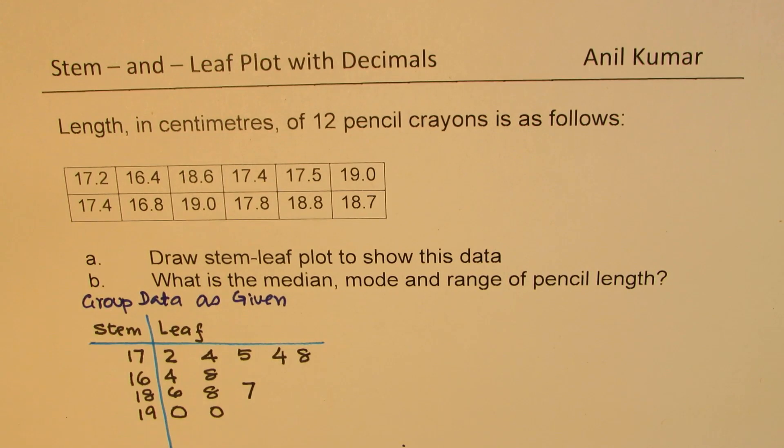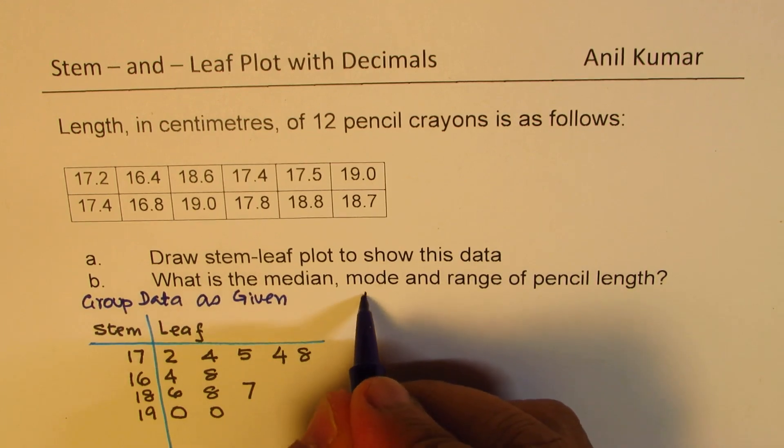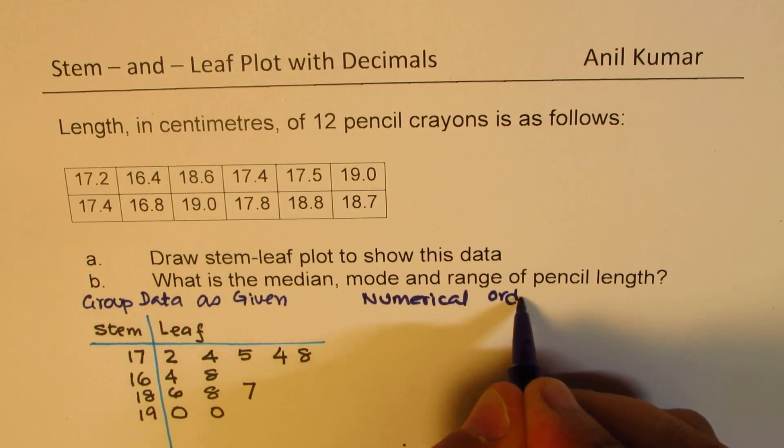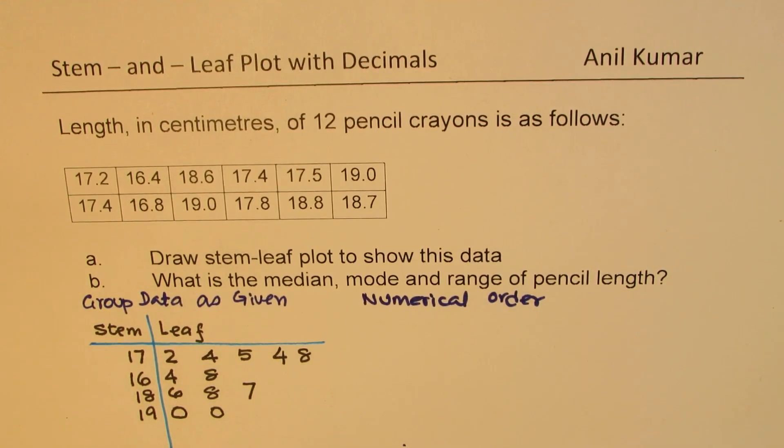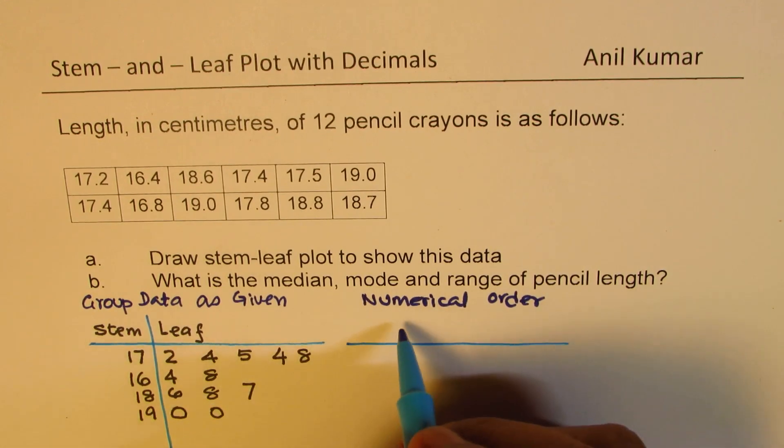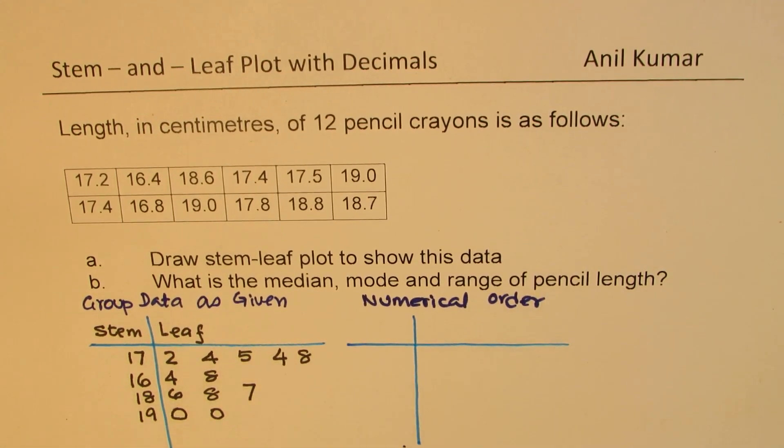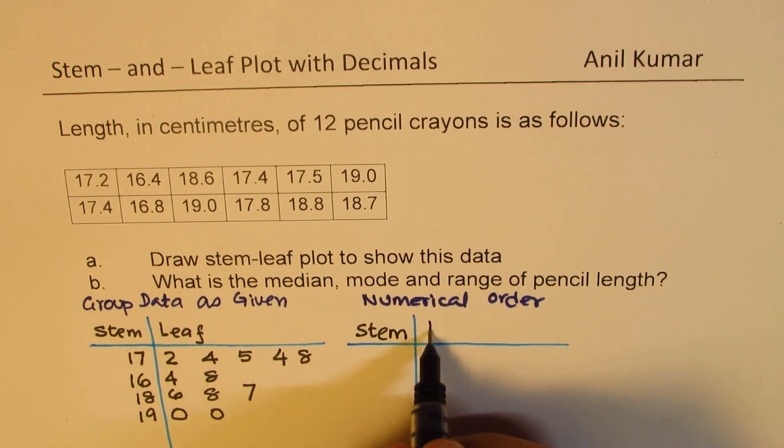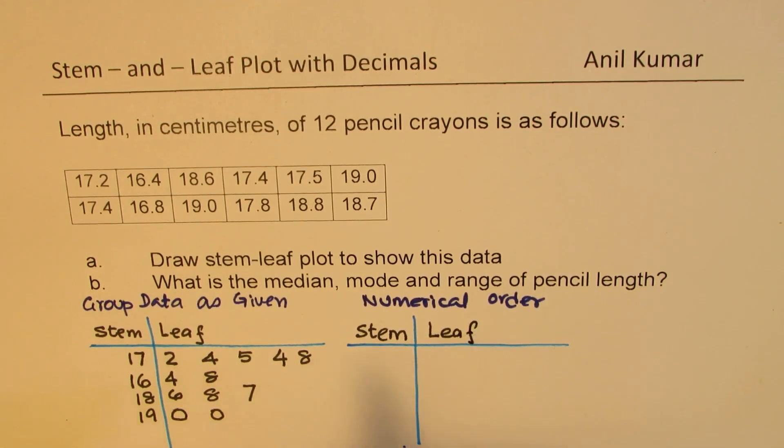So we got this group data in the form of stem and leaf. And now finally what we should do is we should arrange the data in numerical order. So now we'll arrange this in numerical order. So that is going to be our final result. This is our rough sketch.